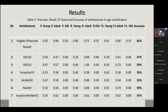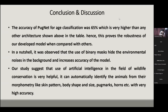In the results, when using red, green, and blue colored images, the accuracy was not satisfactory. When using binary masks trained on blackbuck pug marks, the PugNet model achieved 65% accuracy, while other models had very low accuracy.